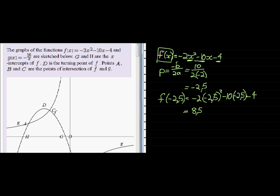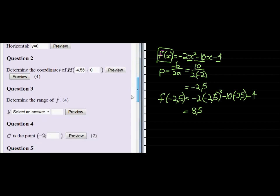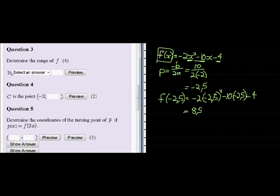And now we can see that 8.5 is the maximum value, that y value of the turning point. So all my other y values go downhill from there. Therefore, the range of the function is y is less than or equal to 8.5.